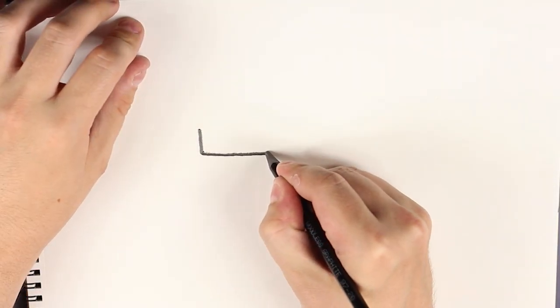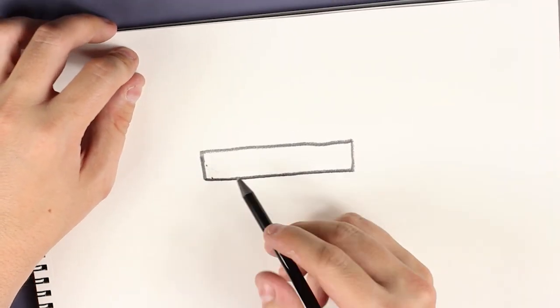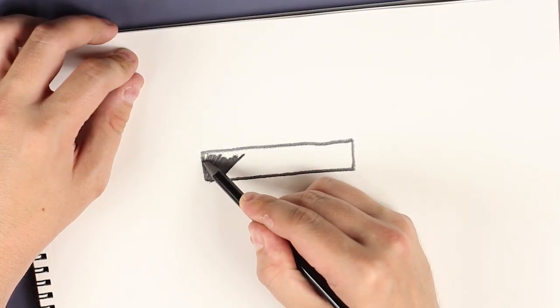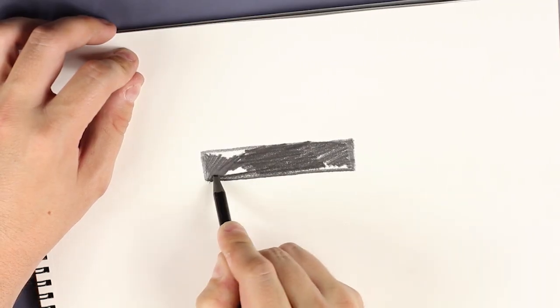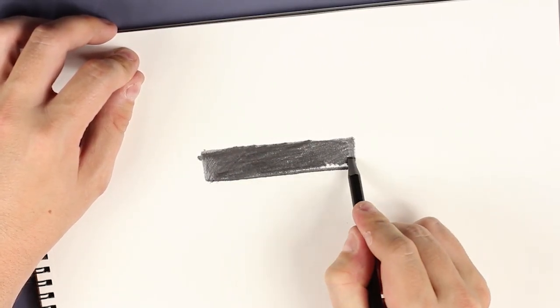In the early 90s, Forrest Mims unleashed several cool experiments on the world in his book called Science Projects. This first example was included. If we draw out a nice thick line on some paper, the graphite in the pencil will actually work as a resistor.